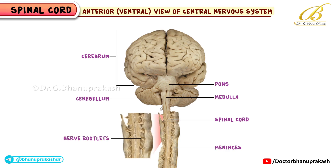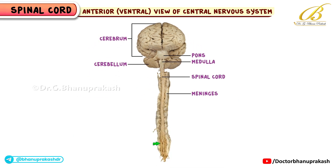These rootlets eventually combine to form the spinal nerves on each side. If you look toward the lower end, you'll see a bunch of nerve roots forming what's known as the cauda equina, which literally means horse's tail due to its appearance.